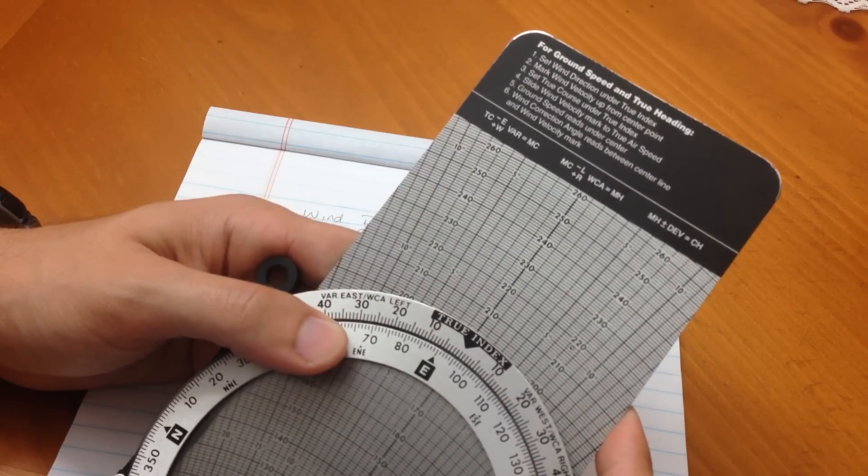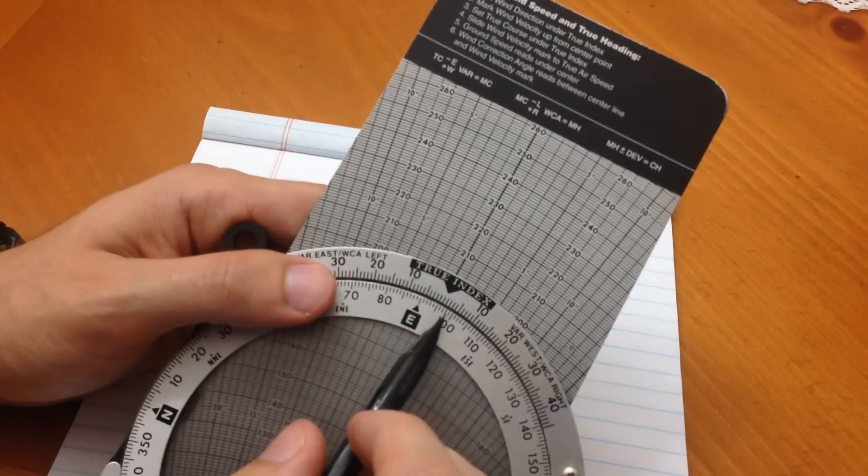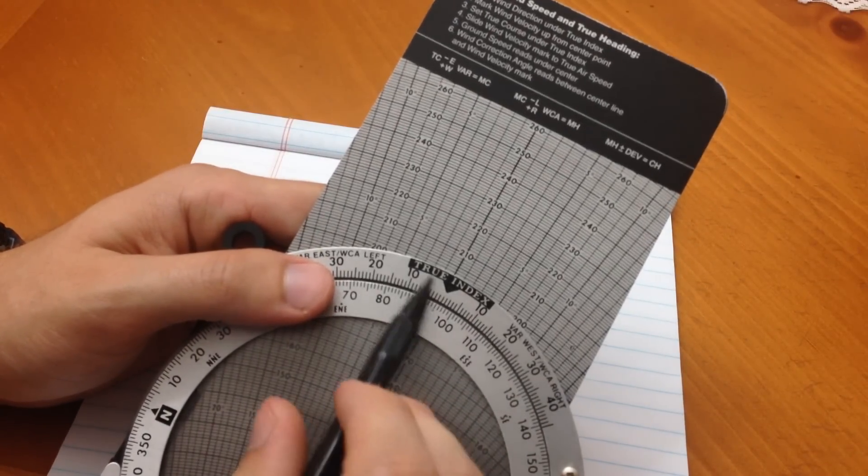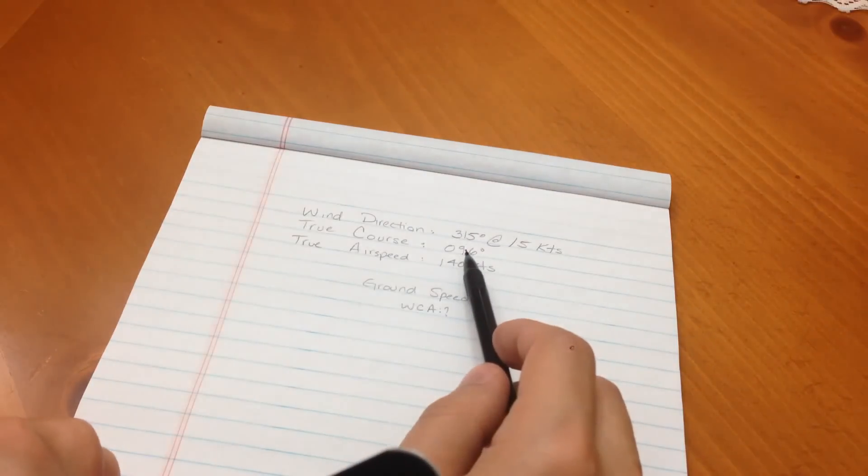So, 95, 96. Okay, so now we read 96 degrees under our true index, which is our indicator right here.